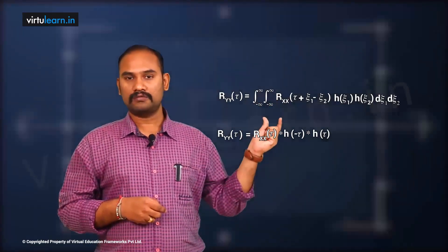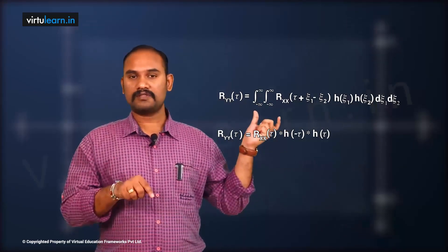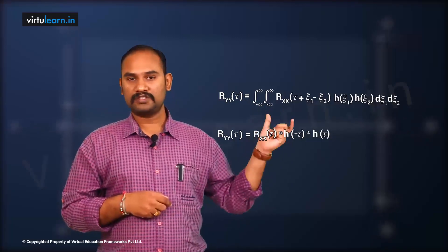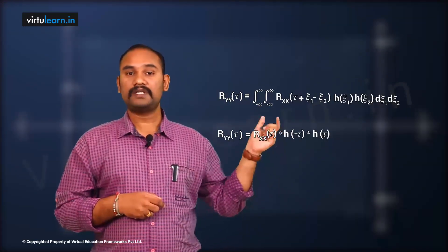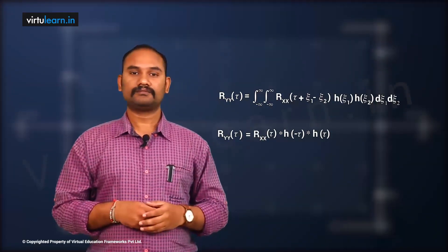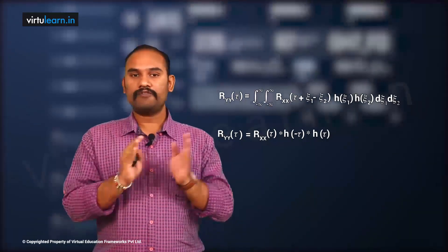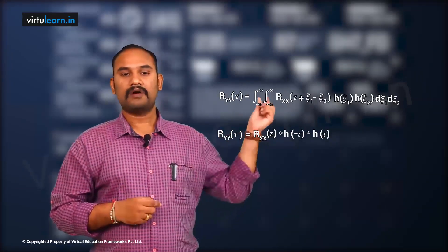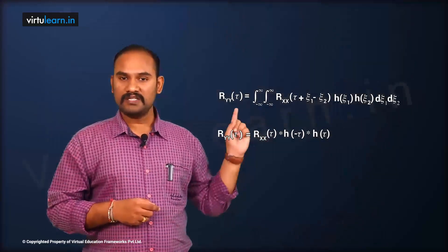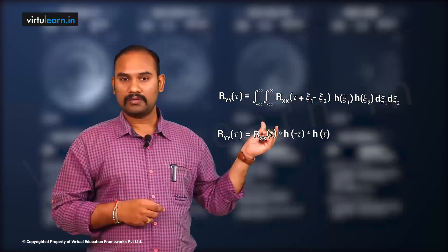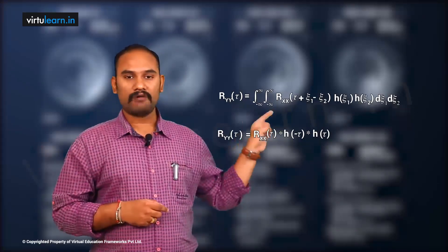To read the notation: R means correlation, yy means auto (since both arguments are y), and y means response. So Ryy means auto-correlation function of the response. We started with Ryy(t, t+τ) but, based on the wide-sense stationarity argument, we write just Ryy(τ) — τ means it is wide-sense stationary.